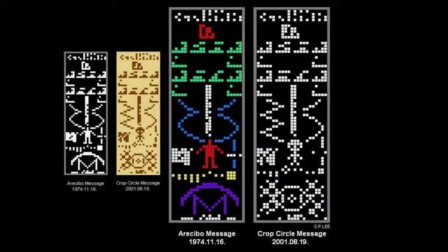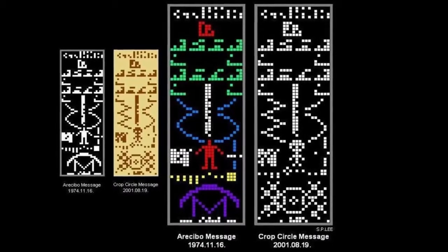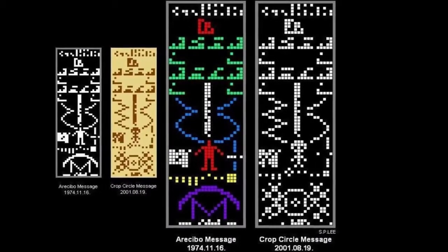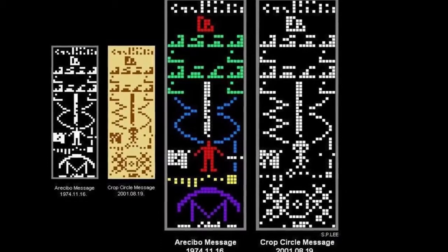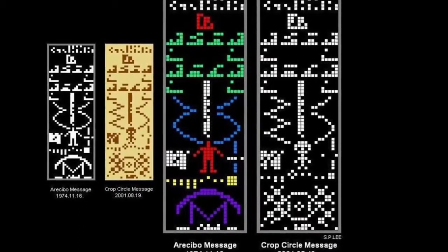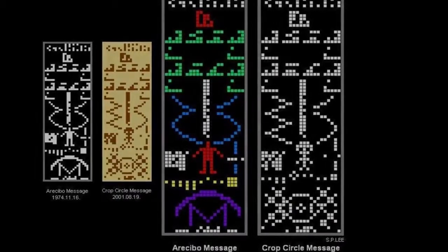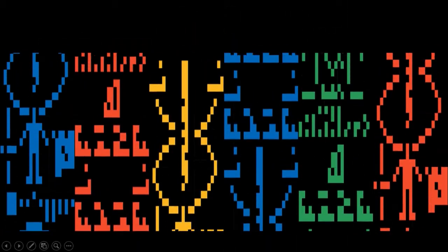Their three-minute radio message, a series of exactly 1,679 binary digits—a multiple of two prime numbers which could be arranged in a grid 73 rows by 23 columns—was aimed at a cluster of stars 25,000 light years away from Earth.